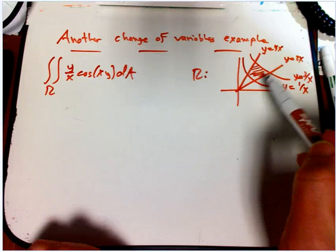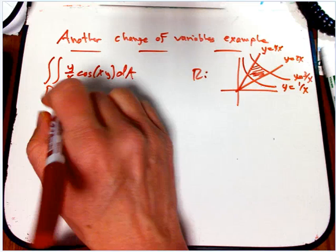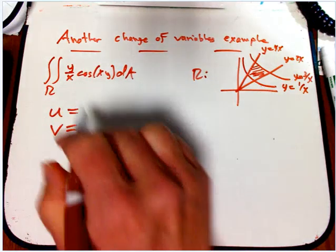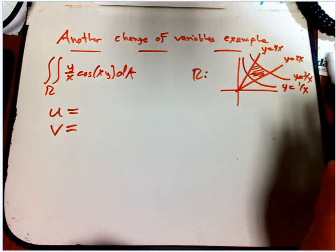Could get really hairy if you don't have change of variables. We've got a perfect setup though. It's a little contrived. We see the same things showing up both in the integrand and in the region, which is a really good clue that change of variables is going to be a good idea.